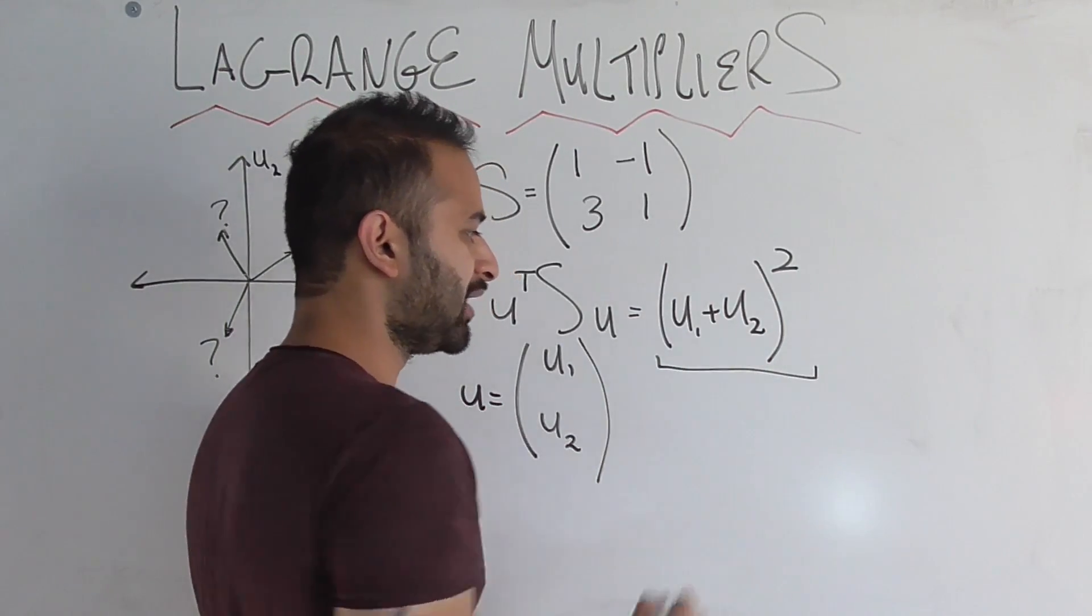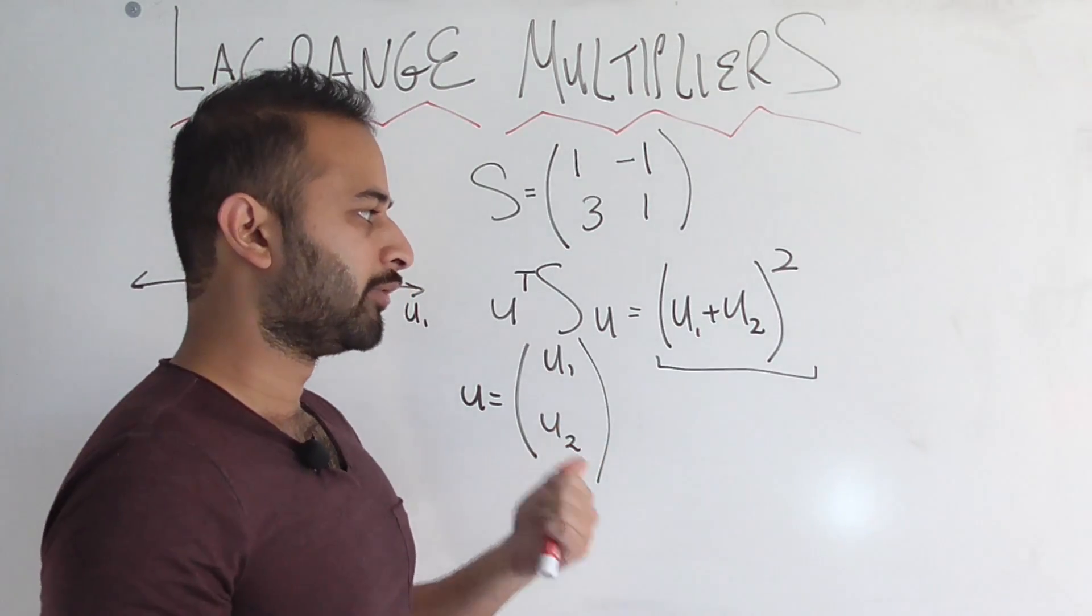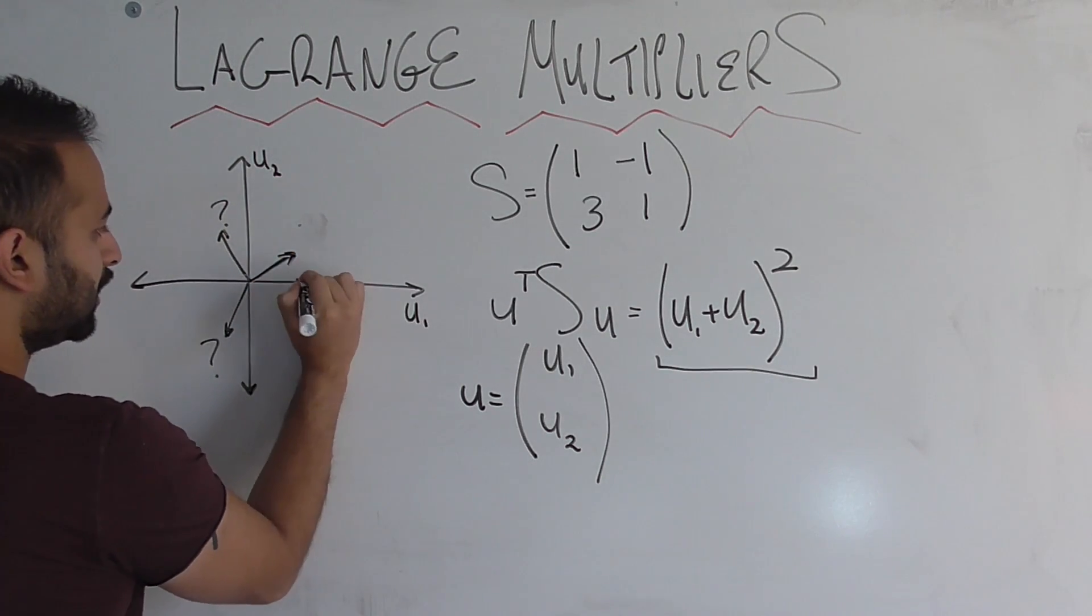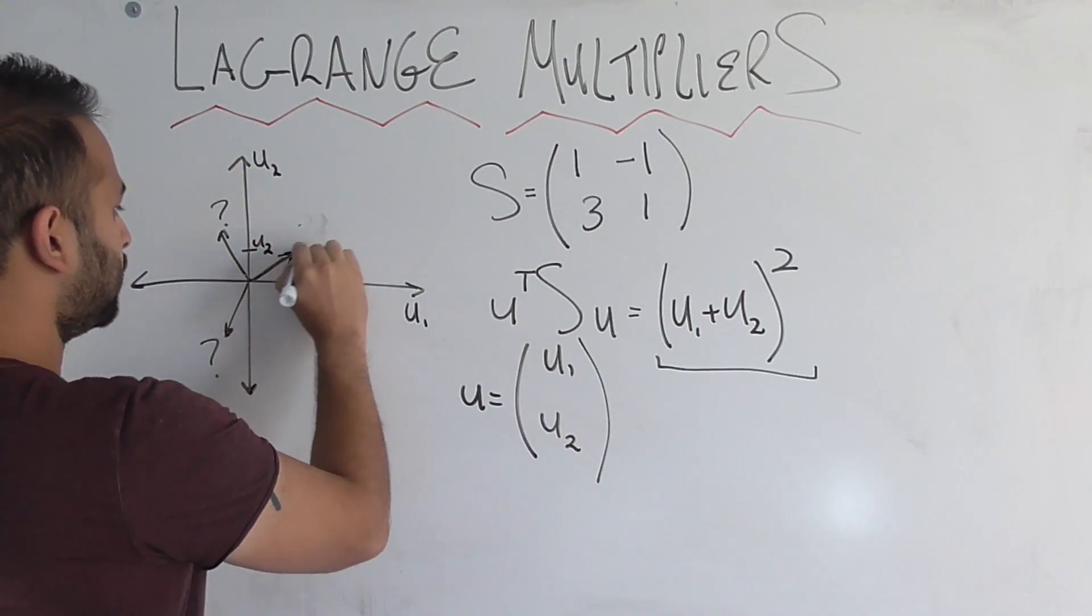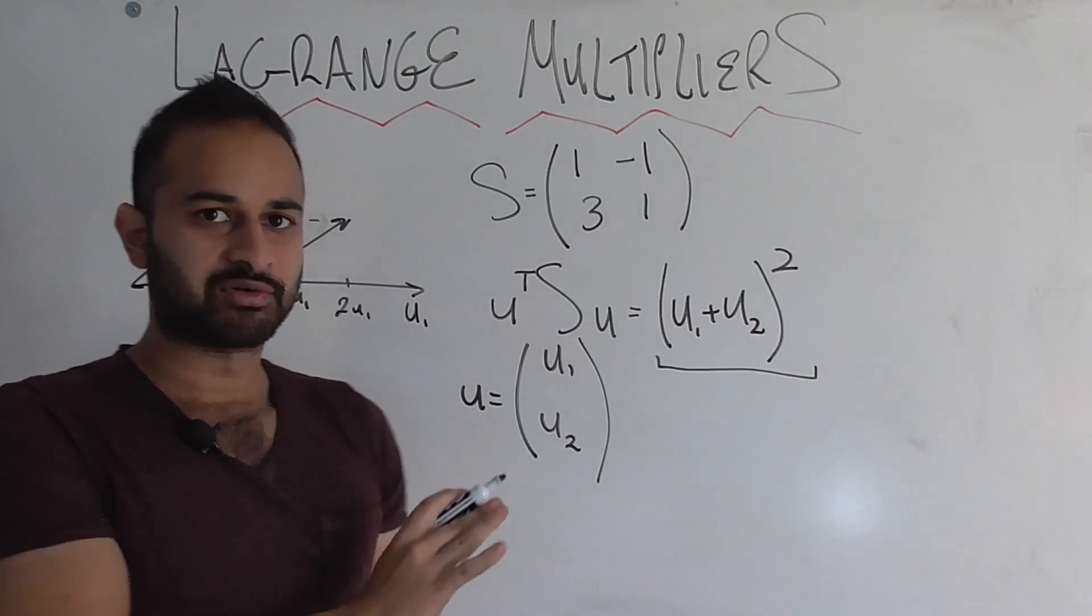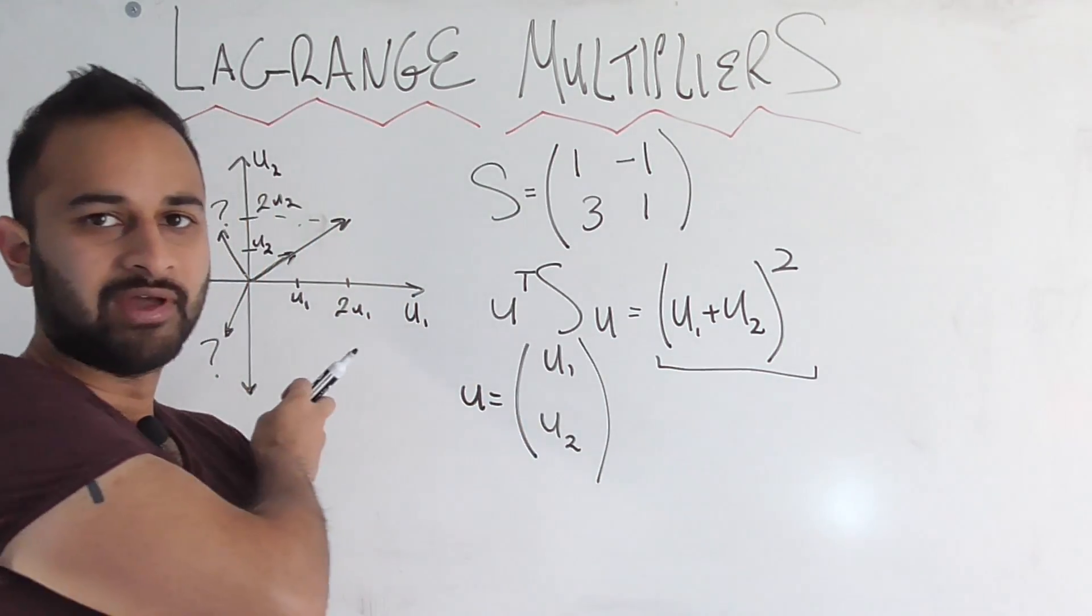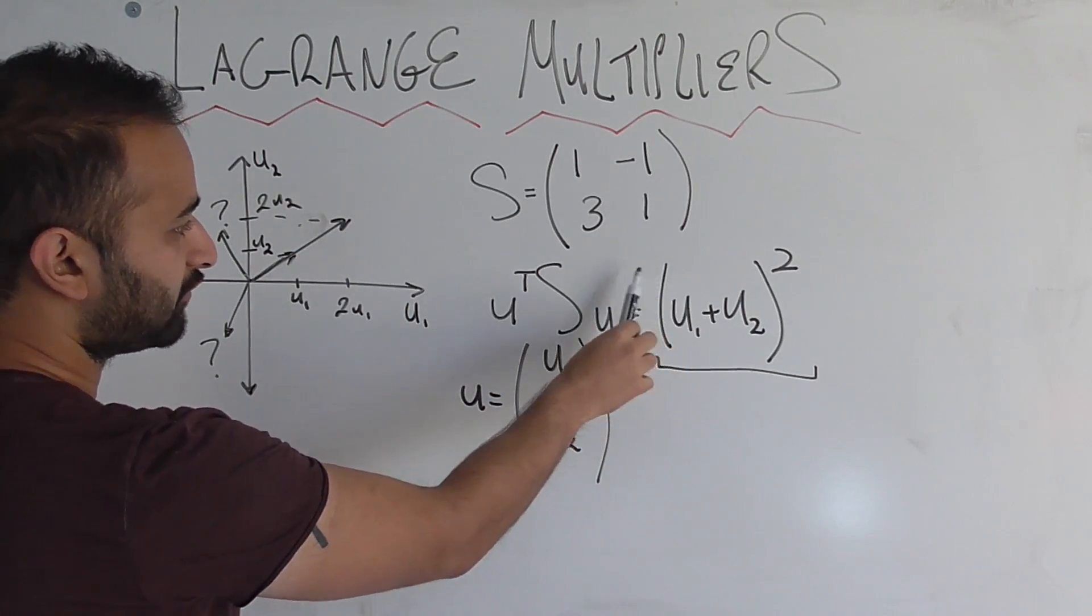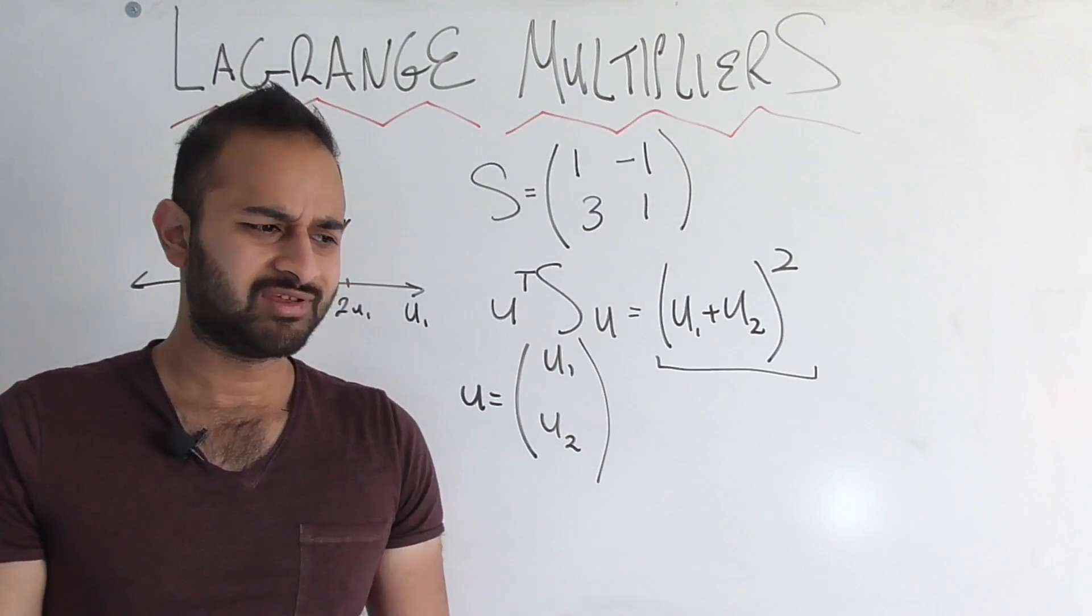We want to find the direction that maximizes this. Seems simple enough, maybe we can just do a calculus problem, but there's something fishy going on already. Let's say we choose to go in this direction right here, with this U1 and this U2. We plug those into the formula and we get some number. Now, let's say we double those components and we go 2U1 and 2U2. Our answer shouldn't change, because we end up going in the same direction. We just chose to represent that with an arrow that was double the magnitude. But it ends up that if we put 2U1 in here and 2U2 in here, then the 2 can get factored out, it gets squared, and we end up with 4 times the amount of success.